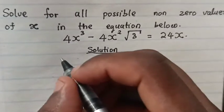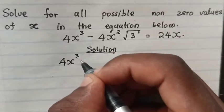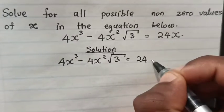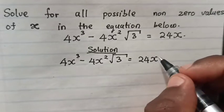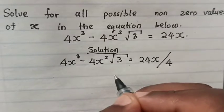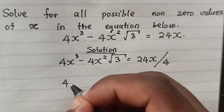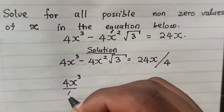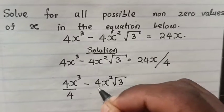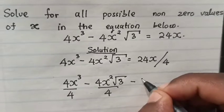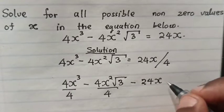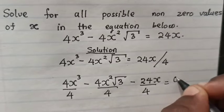From the equation 4x³ minus 4x√3 is equal to 24x. Then we divide all the equation by 4 because it is divisible by 4. So here it will be 4x³ divided by 4 minus 4x√3 divided by 4. And then this 24 we bring to the left side — it will be minus 24x divided by 4 is equal to 0.